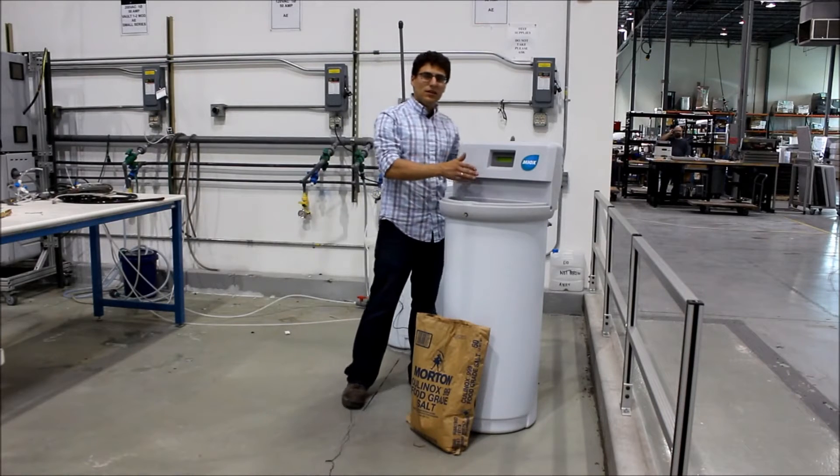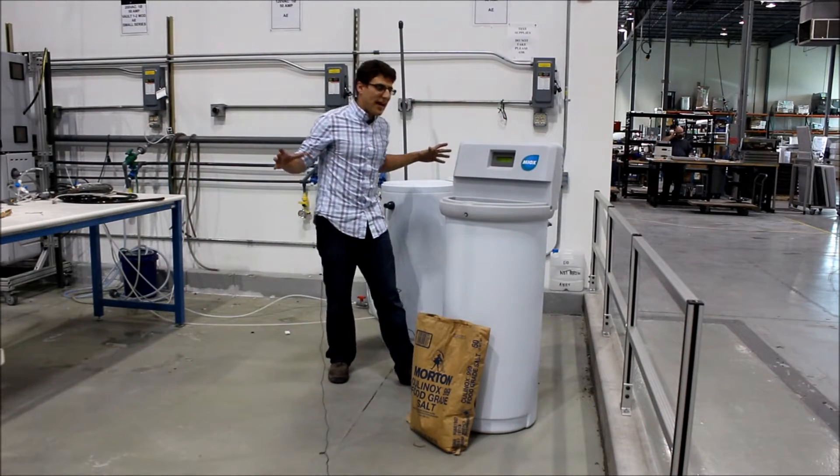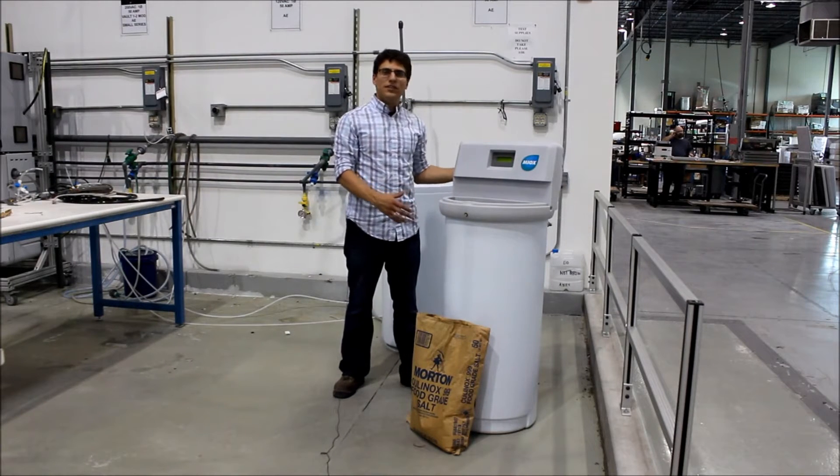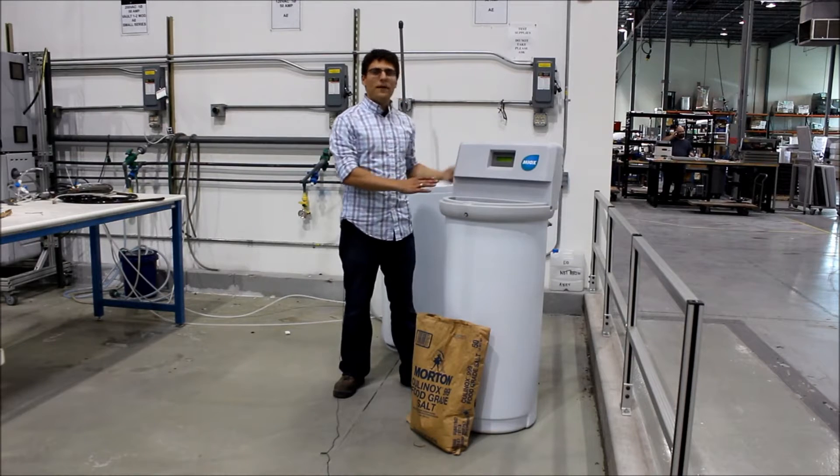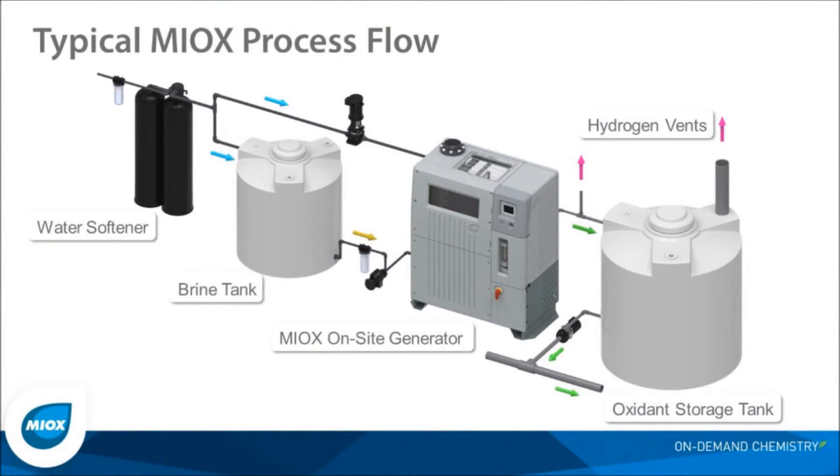So what we're going to do is go through all the parts that we'd like to have leading up to the unit in the process flow, and once we've seen that we'll take a look at the IO of this and go through the flow path and all the components inside. A typical MYOX process flow involves flowing fresh water through a softener and into a brine tank and the OSG. A solution comes out of the brine tank and is merged with fresh water in the on-site generator, passing an electric cell to produce a disinfectant chemistry.